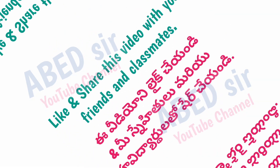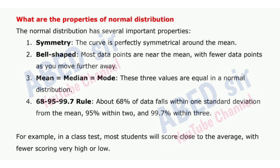Next important short question: What are the properties of normal distribution? The normal distribution has several important properties. 1. Symmetry: the curve is perfectly symmetrical around the mean. 2. Bell-shaped: most data points are near the mean, with fewer data points as you move further away. 3. Mean equals median equals mode: these three values are equal in a normal distribution. 4. The 68-95-99.7 rule: about 68% of data falls within one standard deviation from the mean, 95% within two, and 99.7% within three. For example, in a class test, most students will score close to the average with fewer scoring very high or low.